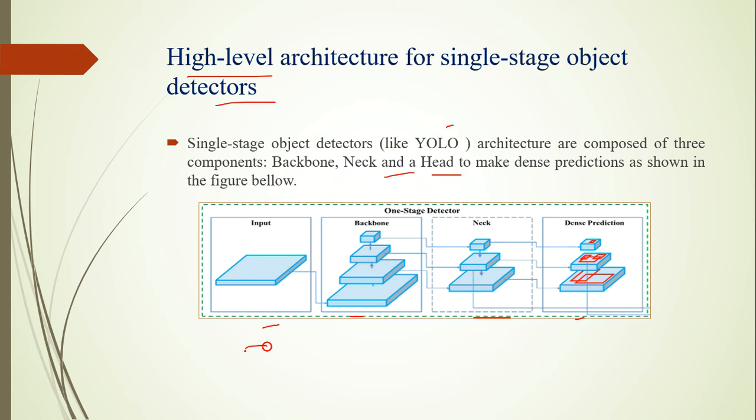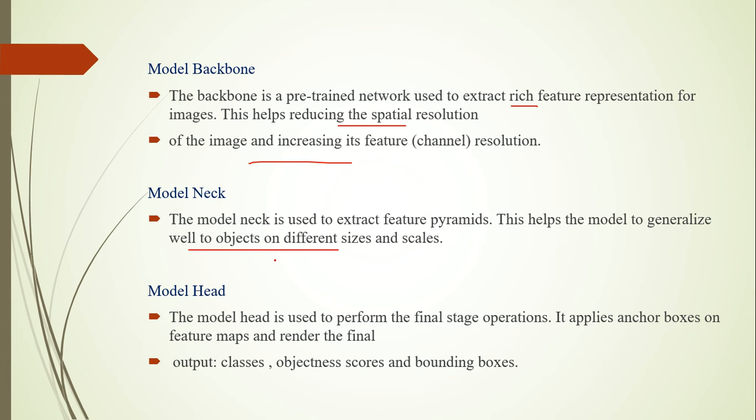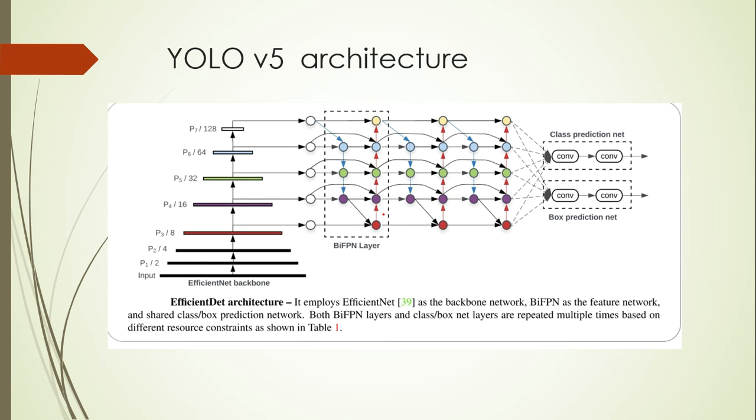Suppose you input an image like a car, you want to predict whether it is small, medium, or large. The head performs the final stage operations. It applies anchor boxes on feature maps and renders the final output: classes, objectness scores, and bounding boxes.